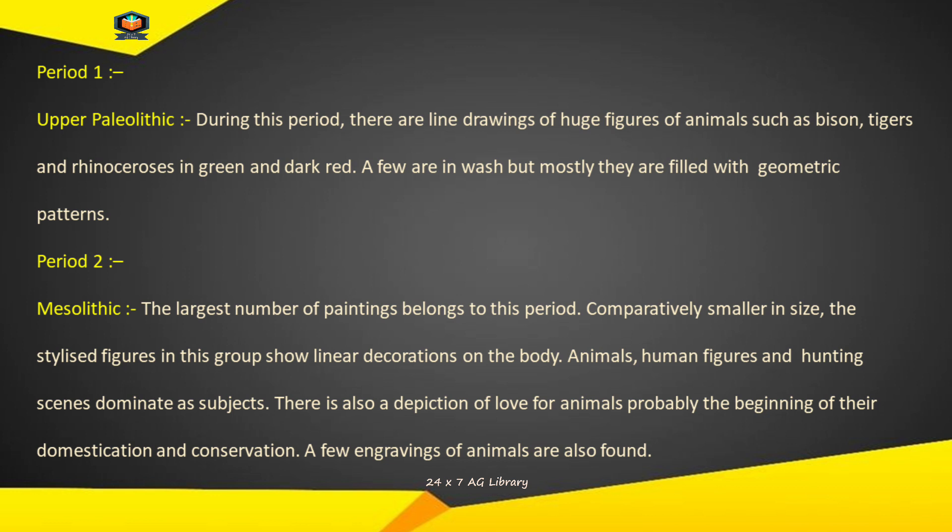Period 2 — Mesolithic: The largest number of paintings belongs to this period. Comparatively smaller in size, the stylized figures in this group show linear decorations on the body. Animals, human figures and hunting scenes dominate as subjects. There is also a depiction of love for animals, probably the beginning of their domestication and conservation. A few engravings of animals are also found. Avdhi do — Madhya paashaan kaal: Sabse adhik sankhya mein chitra isi kaal ke hain. Aakaar mein tulnaatmak roop se chhote, is samooha mein shailikriit aankade sharir par raikhik sajaavat dikhate hain. Vishay ke roop mein pashu, manav aakritiyaan aur shikaar ke drishya haavi hain. Jaanvaron ke prati prem ka bhi chitrann hai, jo shaayad unke paaltoo banaane aur sanrakshan ki shuruaat hai.